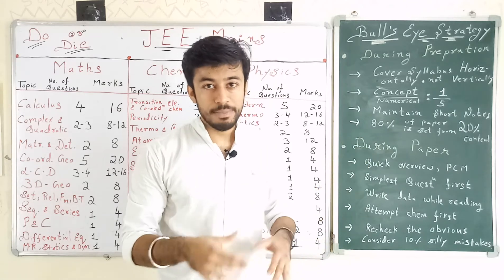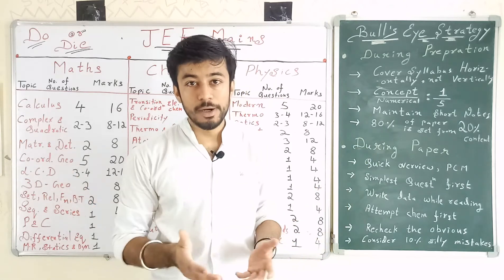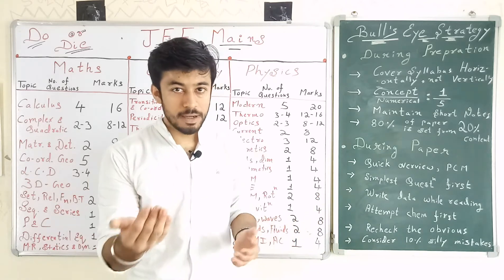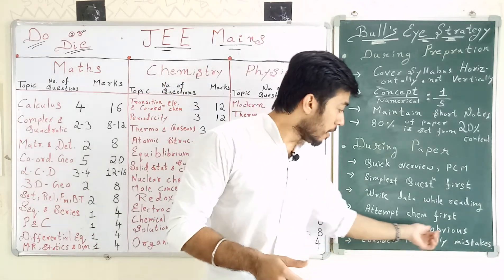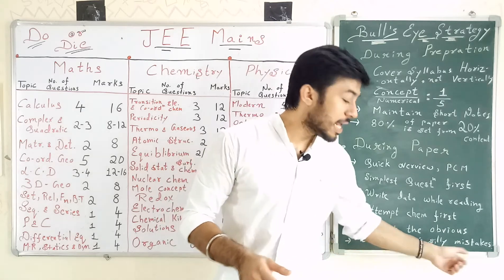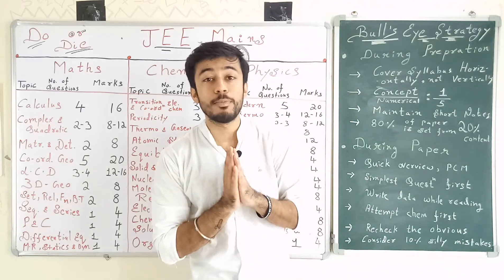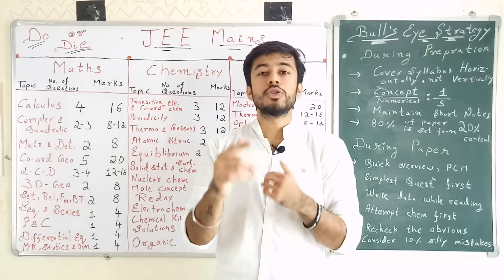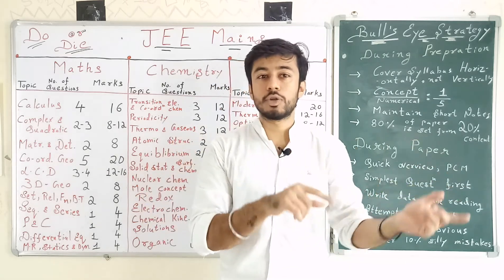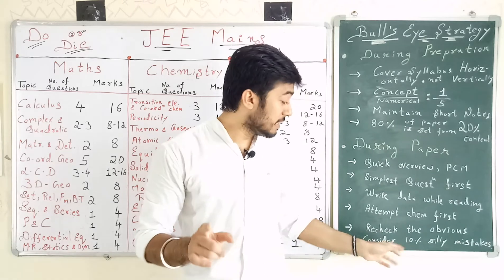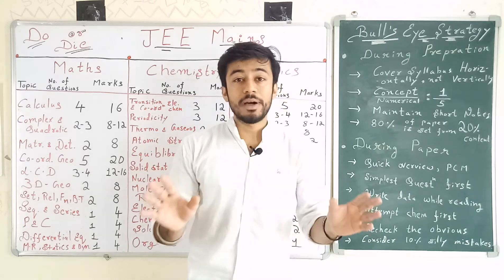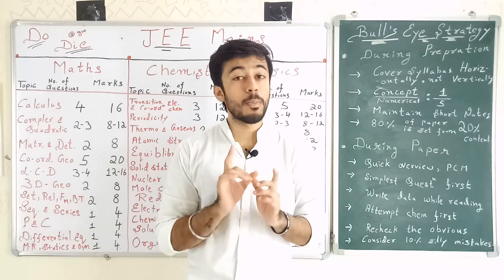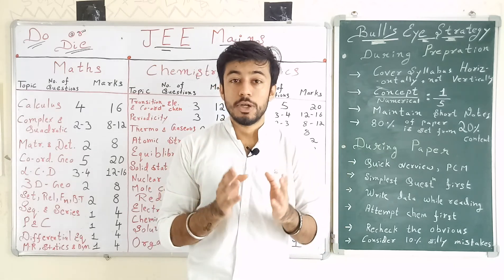Attempt Chemistry first — because it consists of many theoretical topics, it gives you more questions in comparatively lesser time. Reject the obvious answers and account for 10% silly mistakes. If you feel an answer is D, after 10 minutes give it another thought. No matter how bright you are, you will make 10% silly mistakes, so plan accordingly.